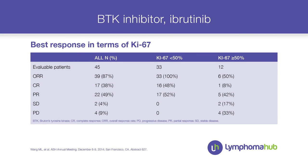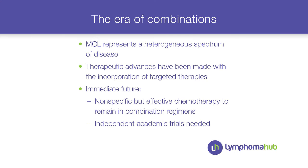As I said, mantle cell lymphoma is a spectrum of disease. Response rate is approximately 100% in cases with low Ki-67 — low cell proliferation — whereas in high-risk cases with very high cell proliferation, the response rate drops to 50%. Even with these very effective compounds, we have to consider intelligent combinations, and this is the real challenge for the coming years.